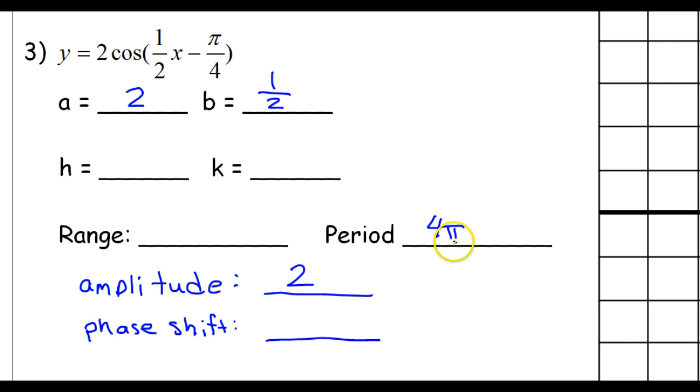I had written 4π. I meant 4π. So, if the period is 4π, then I'm going to go ahead and put my 4π right here. That means halfway will be 2π. Half of that will be 1π, or just π. And then this will be 3π.